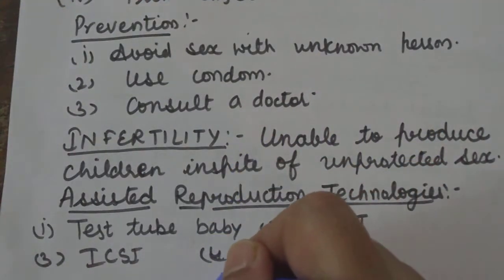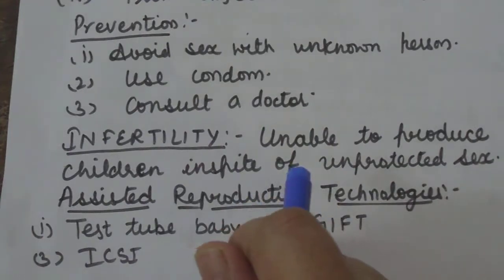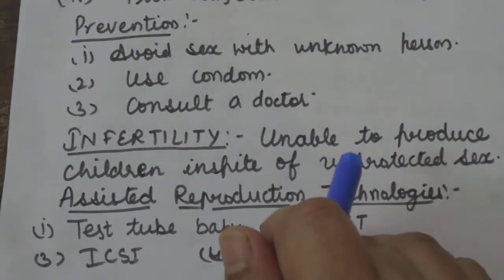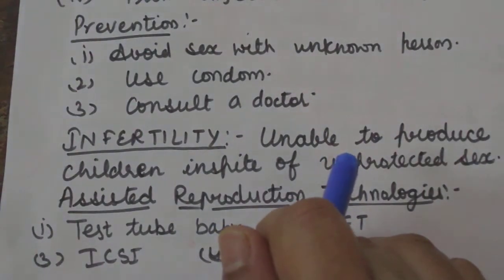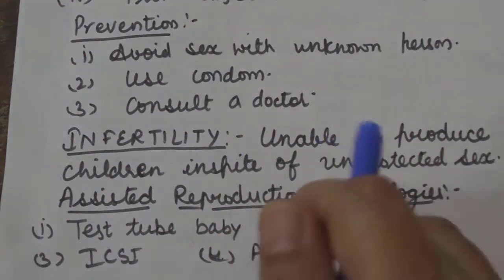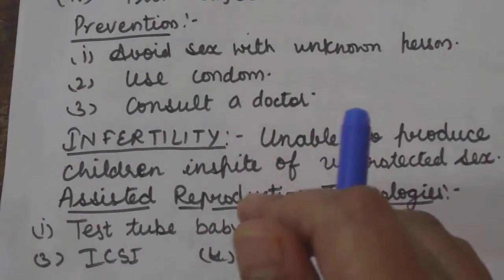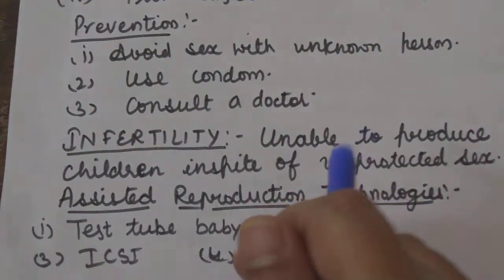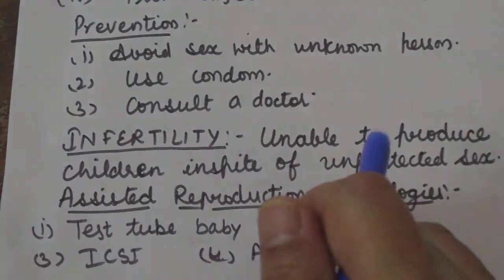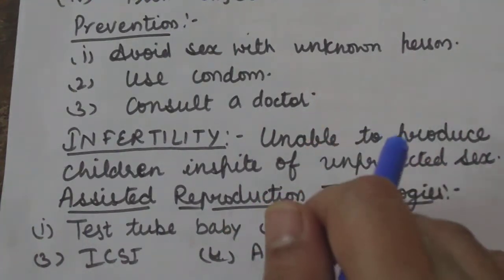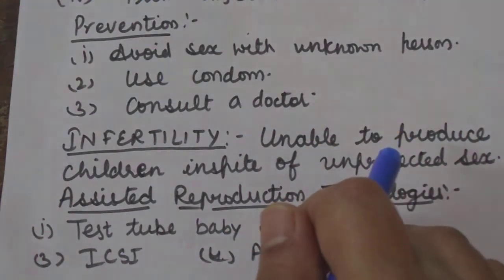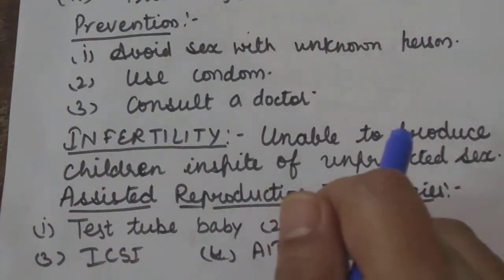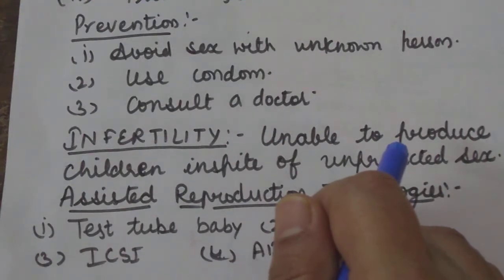The success rate of producing test tube babies is less than 20%. To increase chances, the prospective mother is given fertility drugs which cause many ovarian follicles to mature simultaneously, releasing many eggs at once, thereby increasing chances of success. Additional embryos are transferred to surrogate mothers for completion of development, or can be frozen for later use. Numerous children can be produced by in vitro fertilization without any abnormality.